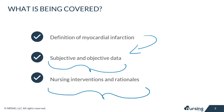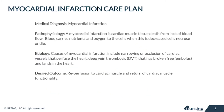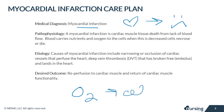Myocardial infarction is cardiac muscle tissue death from lack of blood flow, which is super important because blood carries nutrients and oxygen to the cells. If this doesn't occur, cell necrosis occurs. Causes of an MI include narrowing or occlusion of cardiac vessels, or a DVT that has broken off as an embolus and lands in the heart.